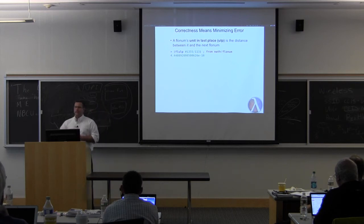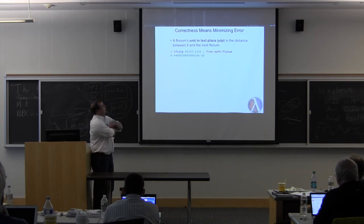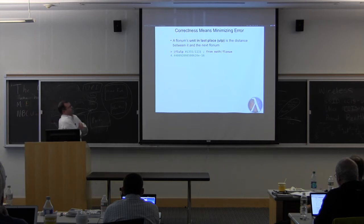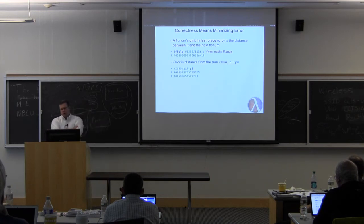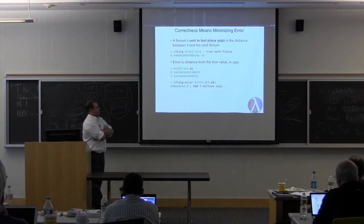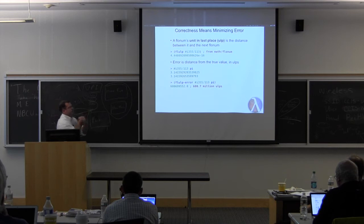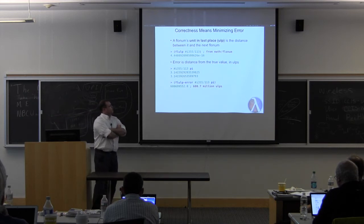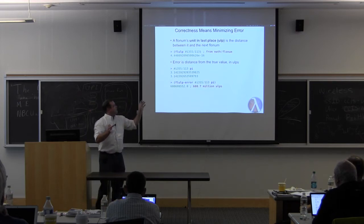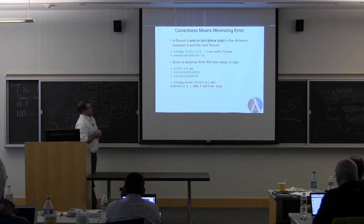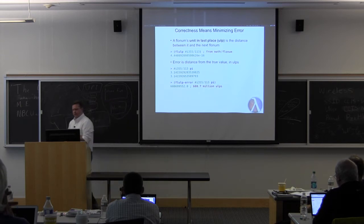Of saying what it means for a floating point function to be correct. We say one's correct when it minimizes error. To have some notion of error, we need a notion of distance. The notion of distance we use is in ALPS, units in last place, which is the distance between two floating point numbers, between a floating point number and the very next one. So, the unit in last place for this approximation of pi, 355 113ths, which is pretty cool, is 4.4 times 10 to the minus 16. That's a pretty small distance between it and the next number. We just convert the distance to ALPS to get error. And the math library conveniently exposes something that measures the error between a floating point number and any real, and it handles NANDs and infinities and stuff.